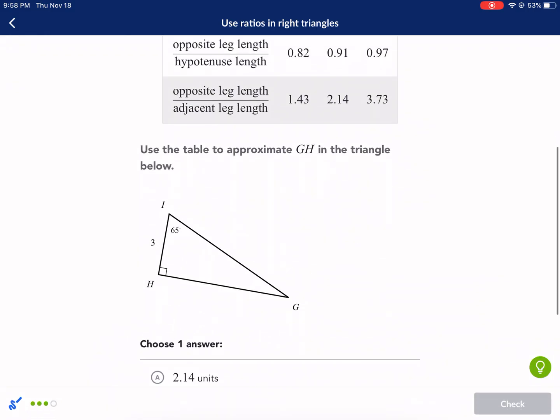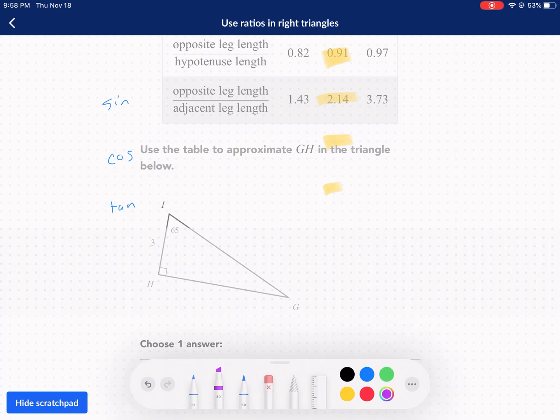The first thing I need is my reference angle. Let's get out my reference angle - there's my reference angle. Next up, I need to label my sides. I have opposite, I have adjacent. Adjacent always touches the angle. It forms the hypotenuse, which is opposite the 90-degree angle.